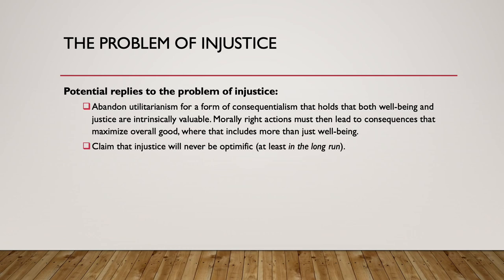Another possibility is to claim that injustice is never going to be optimal, at least in the long run. Maybe violating people's rights could lead to more good in the short run, but when you look at long-run consequences for society, it's going to lead to worse overall results — perhaps because people will find out about the injustice and rebel. But that seems like a hard reply to give, because surely we can come up with possible situations where, in theory, a severe violation of someone's rights is never found out and never leads to those bad consequences. Utilitarianism would still be committed to saying that severe injustice would be morally right in those scenarios.